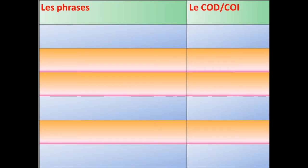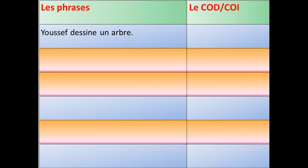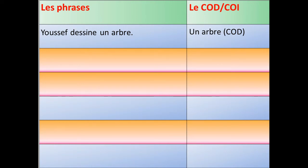On a les phrases et on a, à gauche et à droite, le complément d'objet direct ou le complément d'objet indirect. Dans la première phrase : Youssef dessine un arbre. Le complément d'objet direct, c'est « un arbre ». Youssef dessine quoi ? Youssef dessine un arbre.